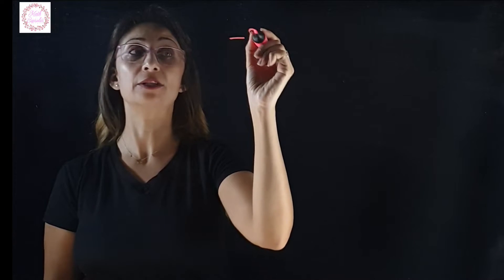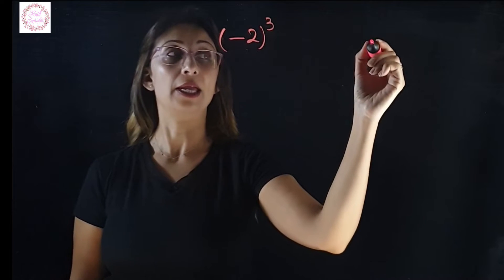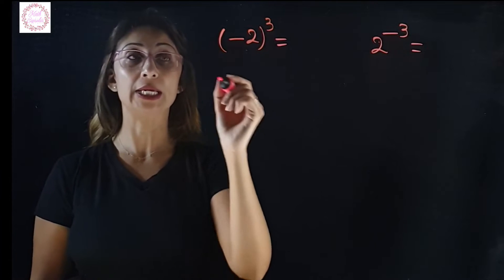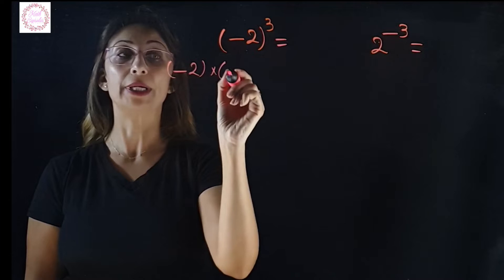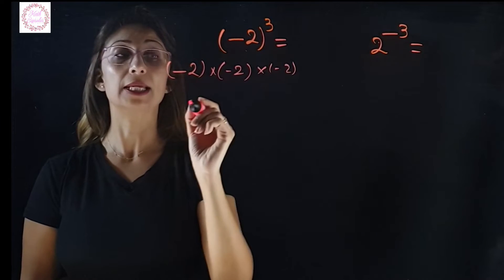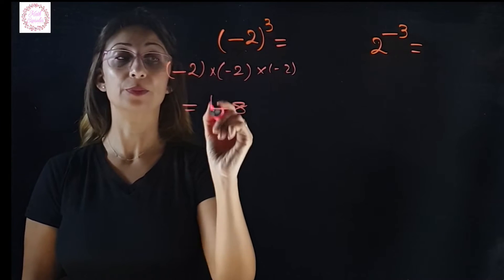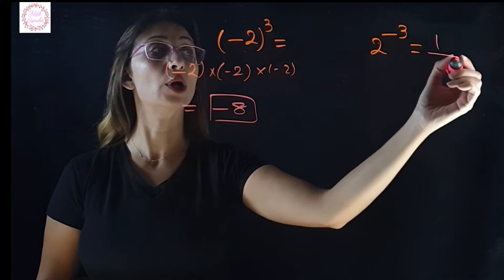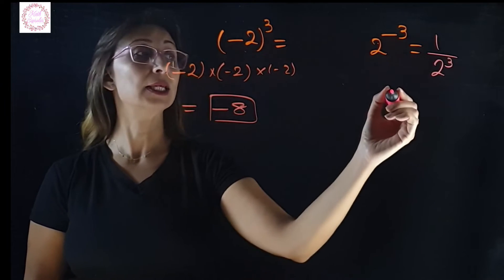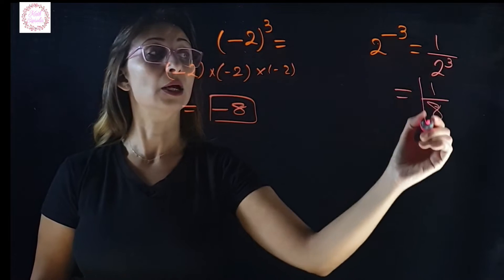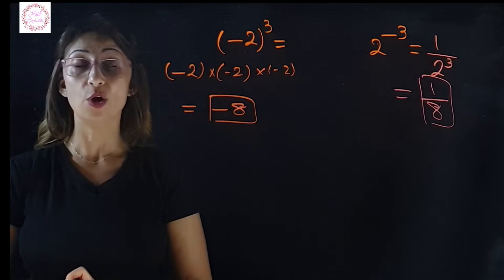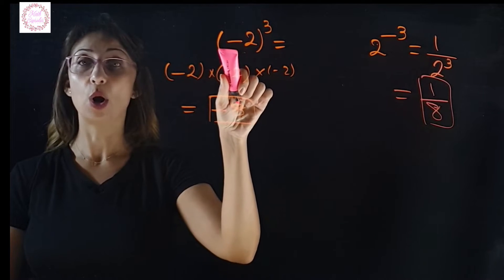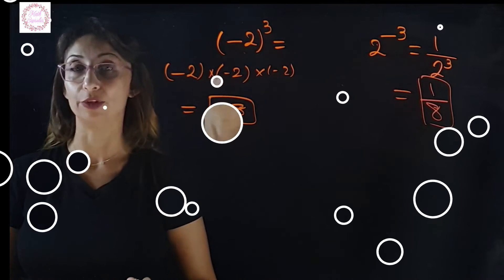Now I want you to be careful — there is a big difference between negative 2 to the power of 3 and 2 to the power of negative 3. Negative 2 power 3 is negative 2 multiplied by negative 2 multiplied by negative 2, which equals negative 8. But 2 power negative 3 means we flip the 2 to get 1 over 2 power 3, which equals 1 over 8. Negative 8 and 1 over 8 are completely different numbers.